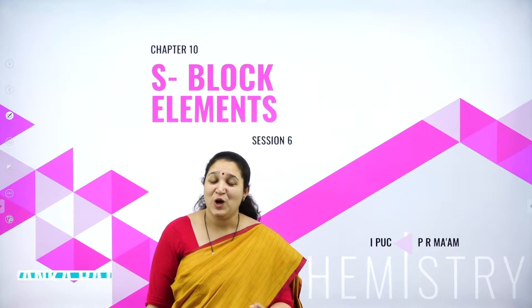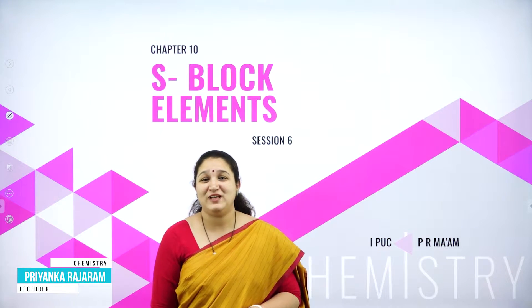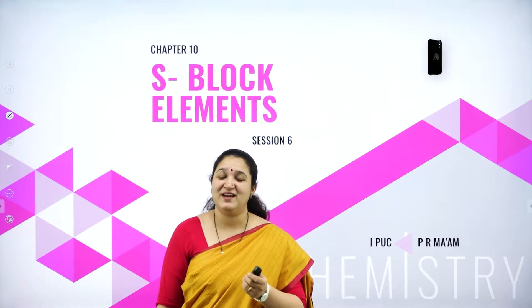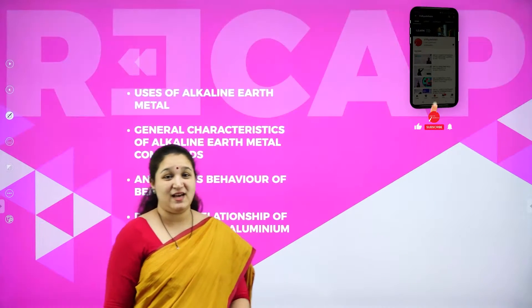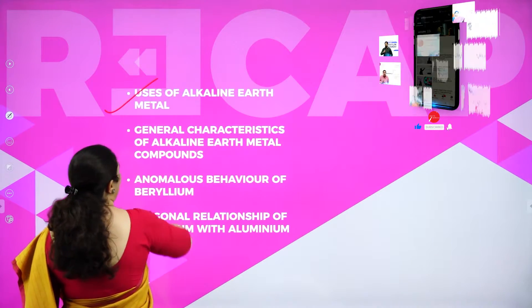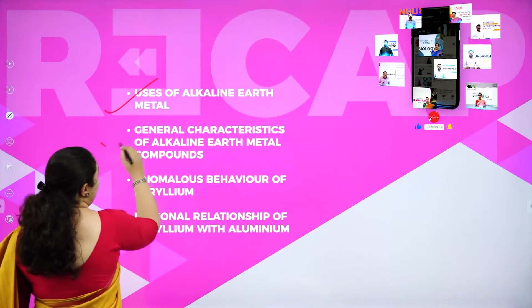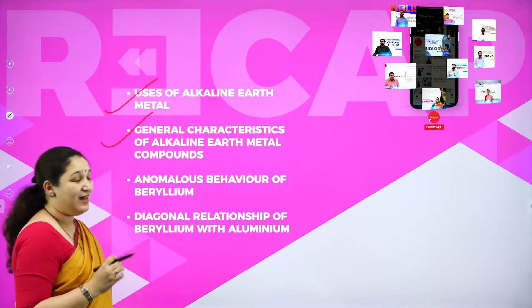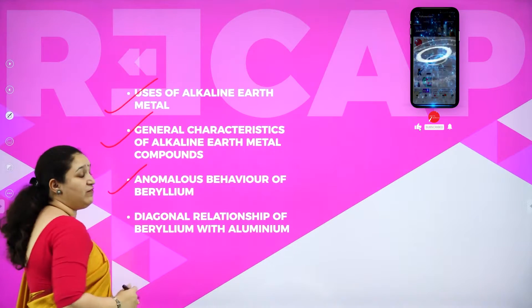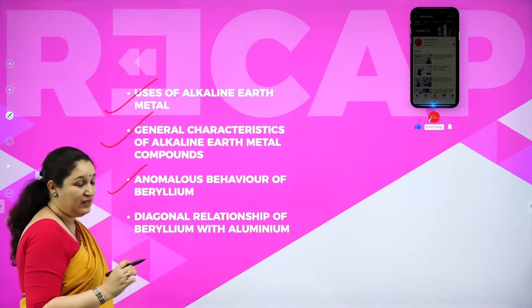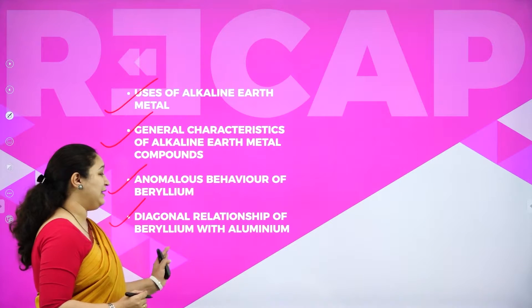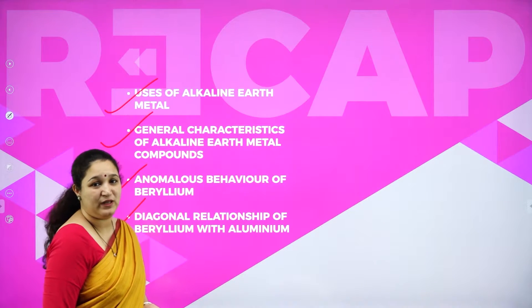Hello, my dear students, welcome back to the last session — session 6 on the chapter S-block elements. Last class we studied about uses of alkaline metals, general characteristics of alkaline earth metals and compounds, anomalous behavior of beryllium, as well as the diagonal relationship between beryllium and aluminium.